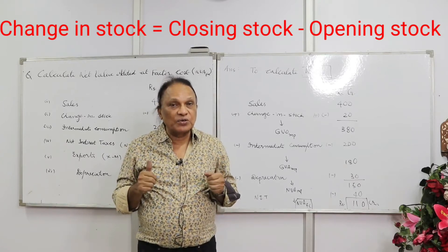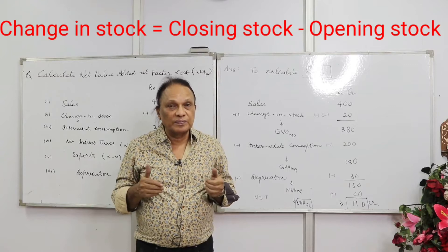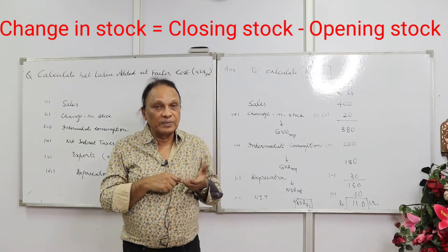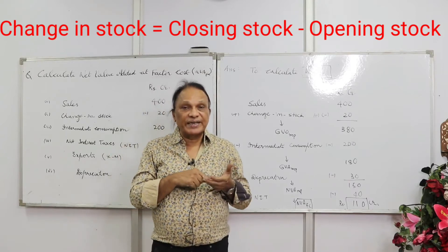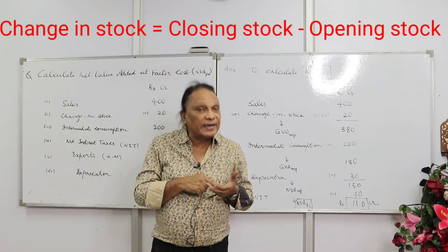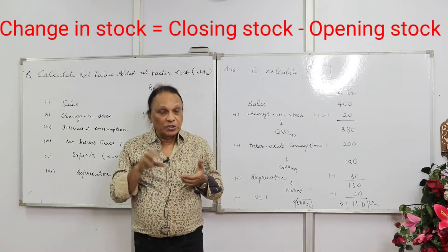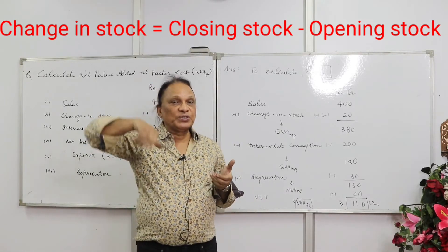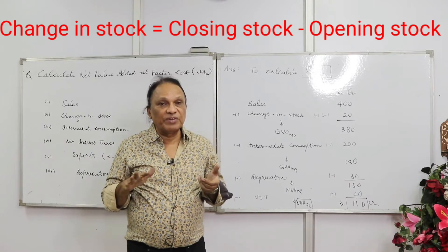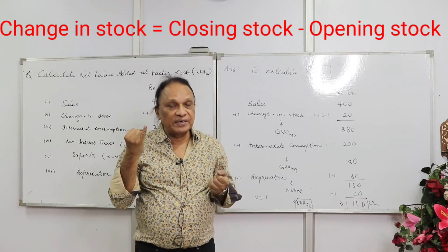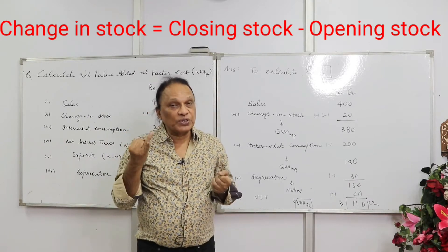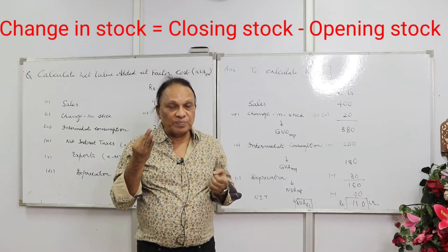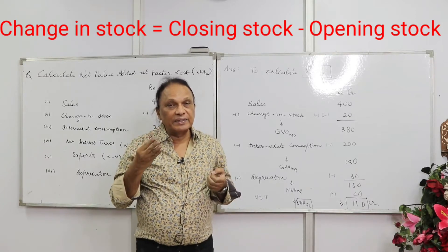So always remember: GVO at MP (gross value of output at market price) equals sales plus change in stock. A nice clue: if they give you sales, don't take exports. But if they give you domestic sales, please add exports. If given domestic sales, add exports and also add the value of goods kept for self-consumption.